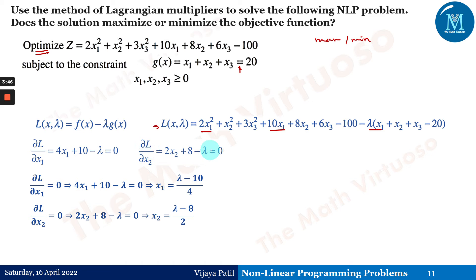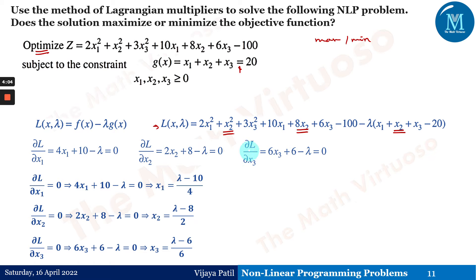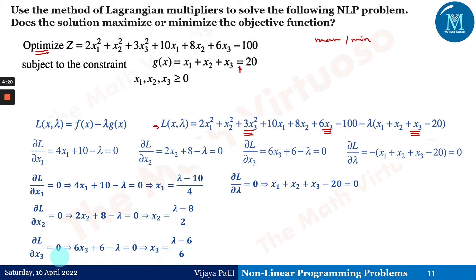Similarly, ∂L/∂x2 = 2x2 + 8 − lambda = 0, giving x2 = (lambda − 8) / 2. The same thing with ∂L/∂x3: we consider the terms containing x3 in L, and equating to zero we get x3 in terms of lambda. Differentiating L with respect to lambda gives us x1 + x2 + x3 − 20 = 0, so x1 + x2 + x3 = 20.